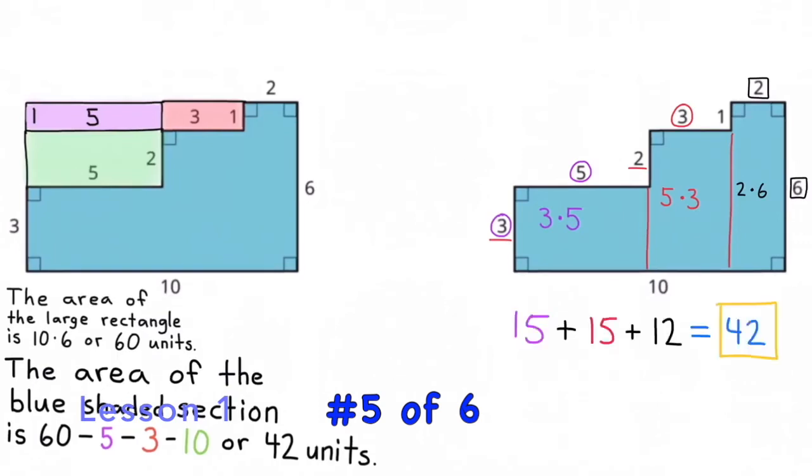The area of the quadrilateral on the left is 15, the area of the quadrilateral in the middle is also 15, and the area of the quadrilateral on the right is 12. 15 plus 15 plus 12 equals 42. Just like the shaded blue area in the shape on the left, the area of this shape is also 42.